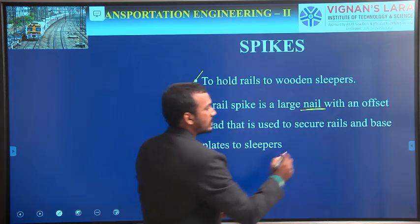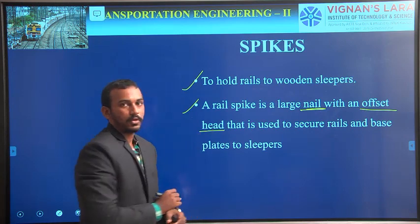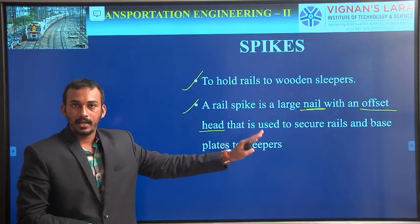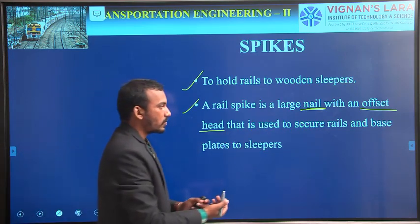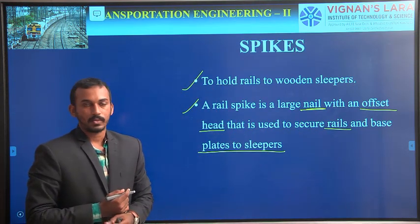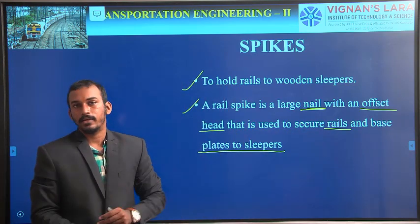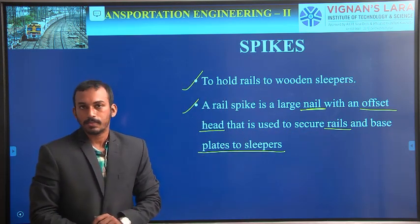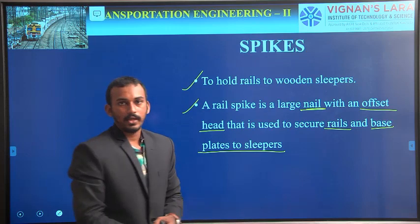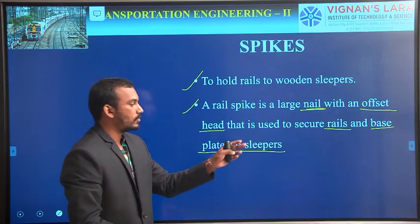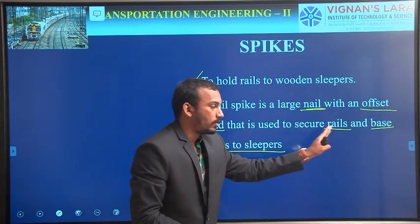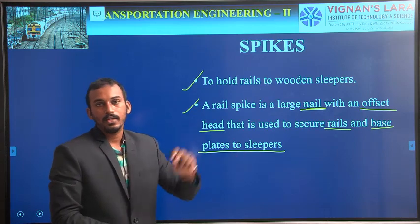A rail spike is nothing but a nail, but the difference is it has an offset head. Nails do not have any offset head. Spikes are similar to nails with an offset head, and are used to secure rails and base plates of the sleepers. Base plate is nothing but a bearing plate, and those are generally used in the case of wooden sleepers only. If we use any base plate, then these spikes are also used to secure rails and base plates to the sleepers.